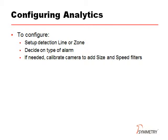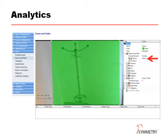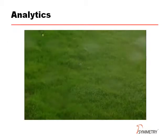Configuring the analytics can be as simple as creating a detection line or zone and deciding on the type of alert required, such as Enter or Appear. Here we can see the detection zone in red, and the menu on the right-hand side shows that we are looking for a person to appear in it. This is the configuration setup for the video clip we saw earlier of the person with the cardboard box. Here is another example where we are looking for a person to dwell or loiter in the detection zone for five seconds — this configuration might be useful if we are looking for someone going through the pockets of a coat on the coat rack.